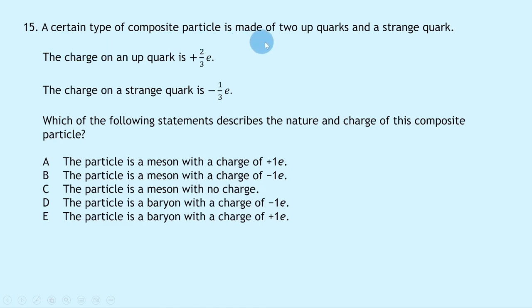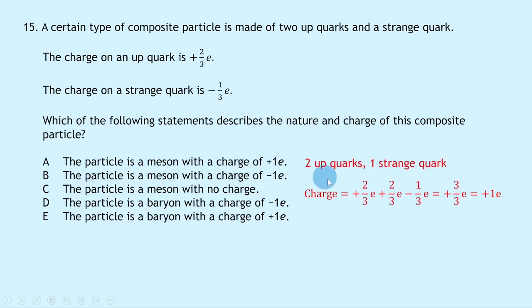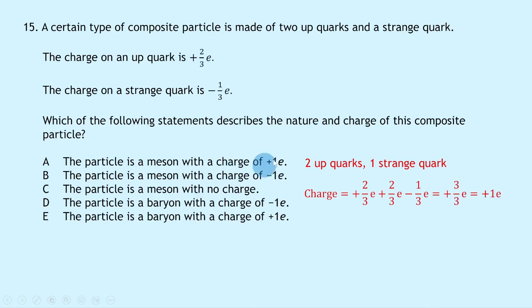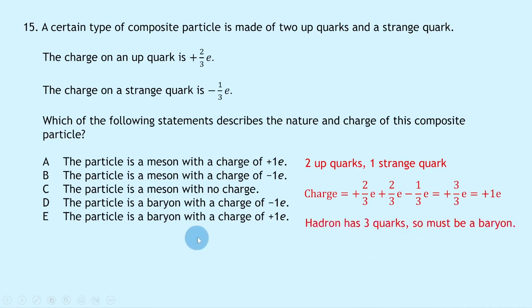Question 15 says a composite particle is made of two up quarks and a strange quark. The charge on an up quark is +⅔e and on a strange quark is −⅓e. Total charge = +⅔e + ⅔e − ⅓e = +3/3e = +1e. So the charge is +1e. Since it has three quarks it must be a baryon, not a meson (which has only two quarks / a quark–antiquark pair). The answer is E: a baryon with charge +1e.